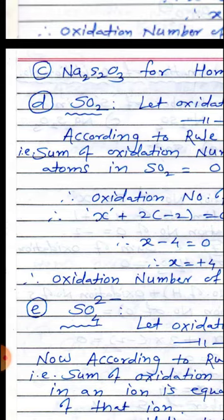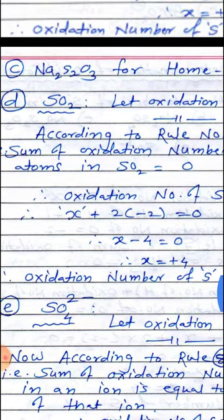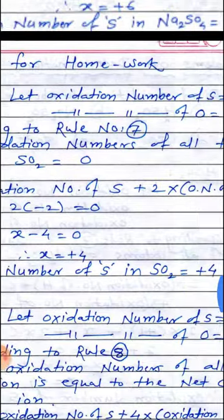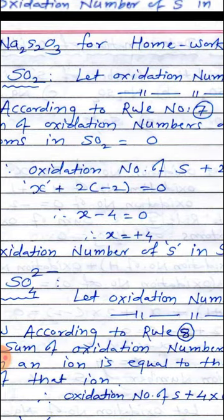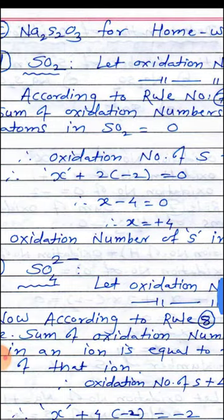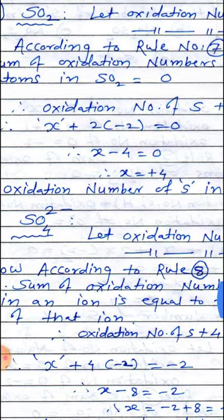We make the equation: oxidation number of S plus 2 into (oxidation number of oxygen) equals 0. Therefore x plus 2 into (−2) equals 0, giving x minus 4 equals 0, so x equals plus 4. Therefore the oxidation number of S in SO₂ equals plus 4.